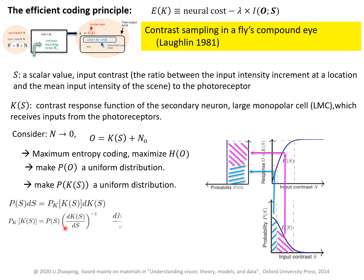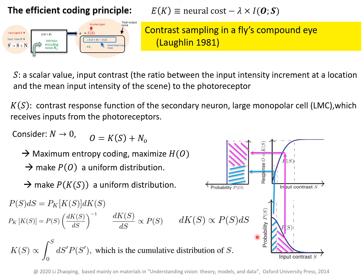We require this probability to be uniform, so it is a constant. That means this expression must be a constant, which requires the sensitivity — the slope of the contrast response function — to scale with the probability of the input. Integrating this equation, the contrast response function Ks should be the cumulative distribution of the input contrast. So if you know the statistics of your input through its probability distribution, you can completely determine the contrast response function via maximum entropy coding.